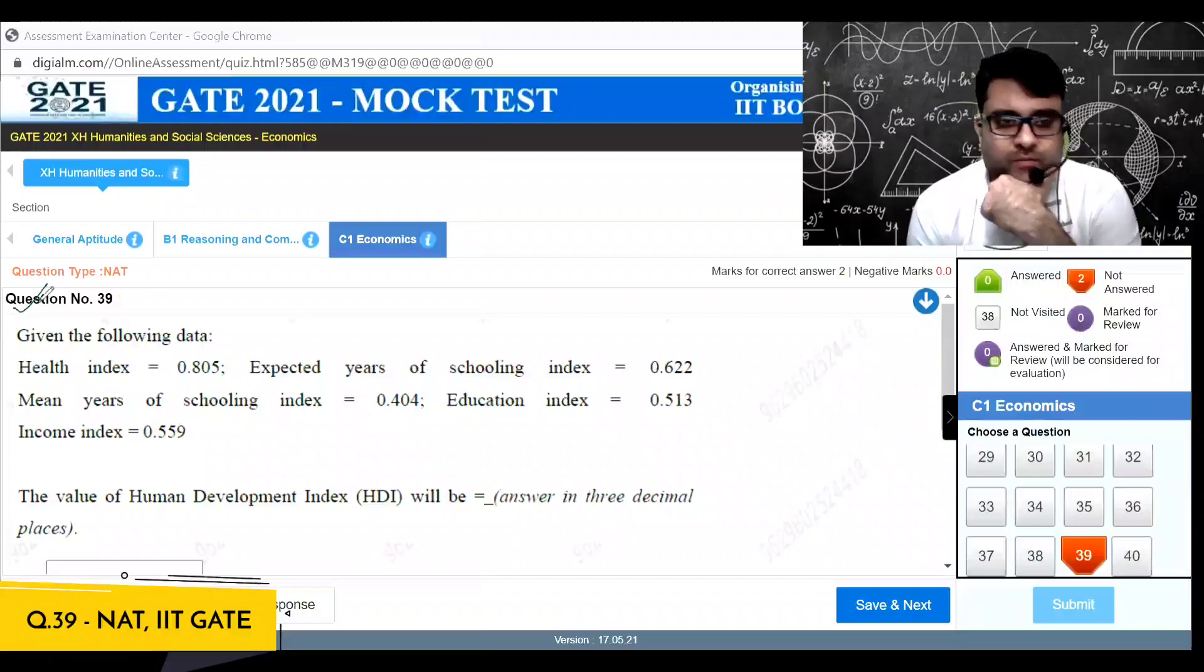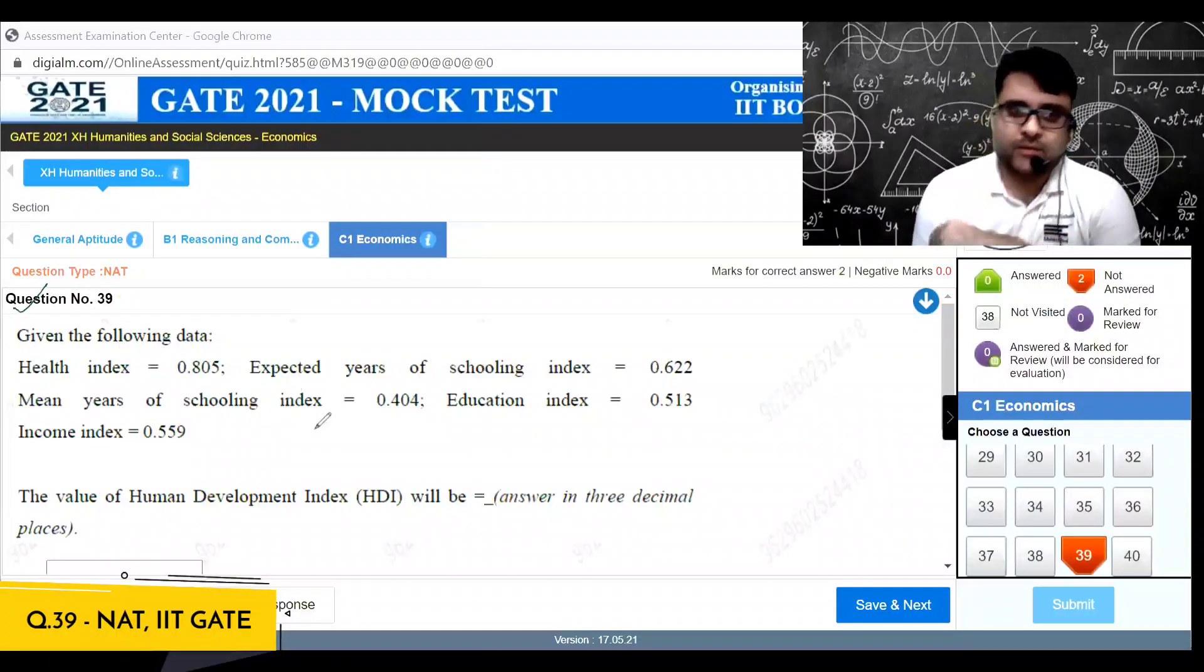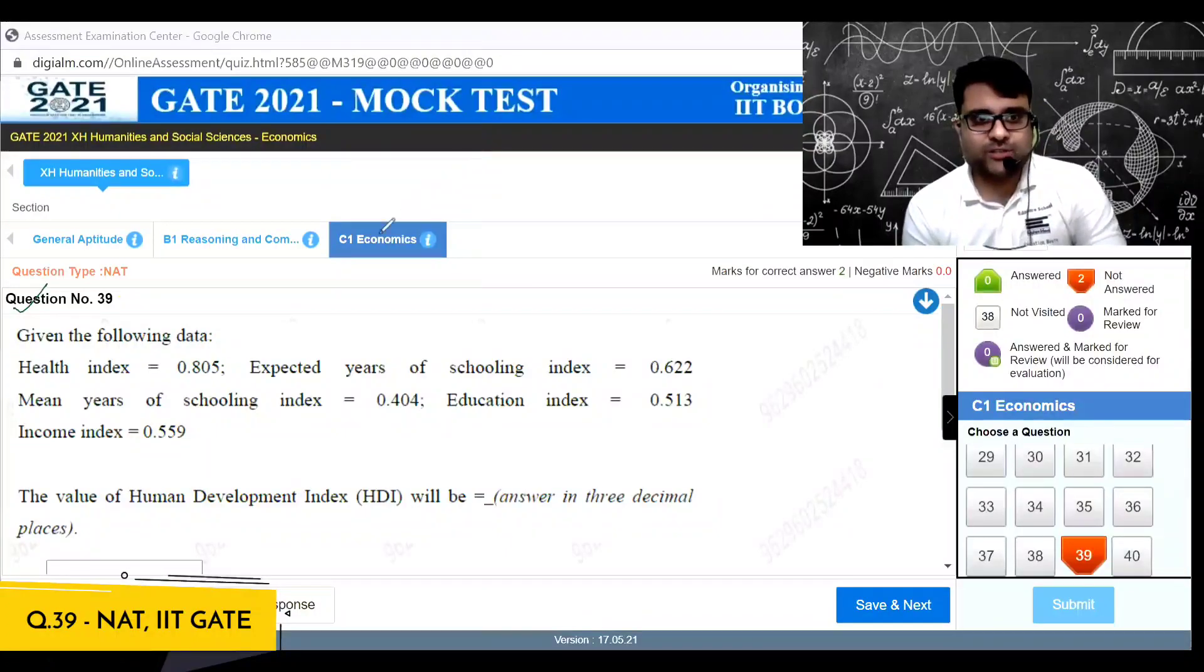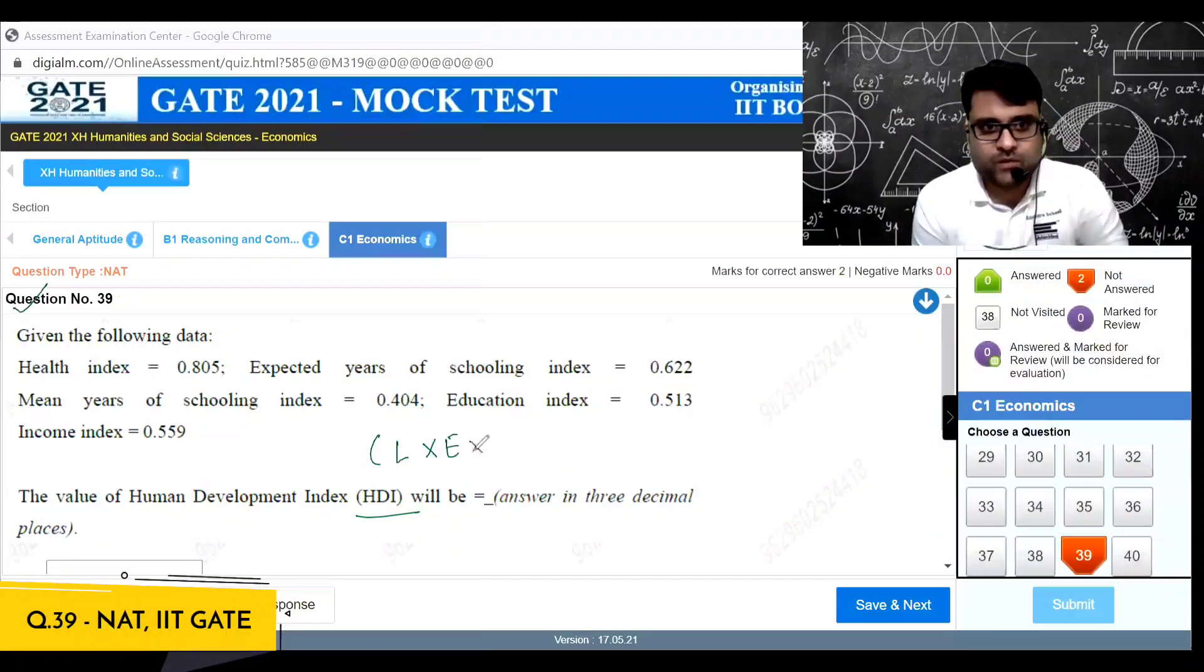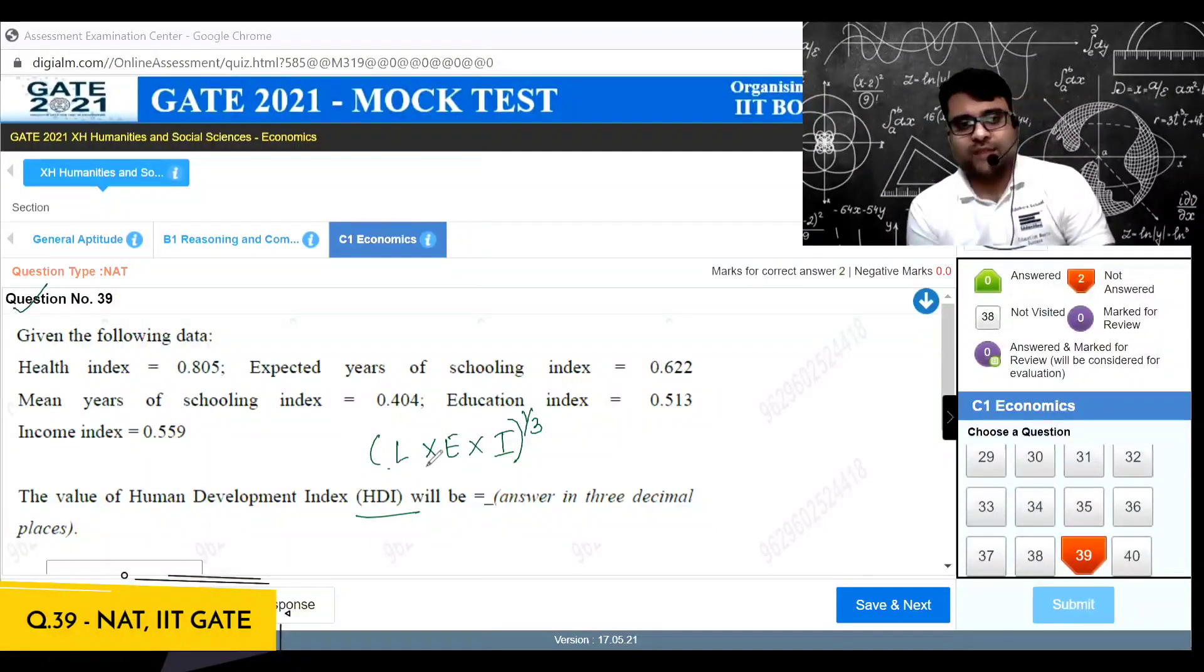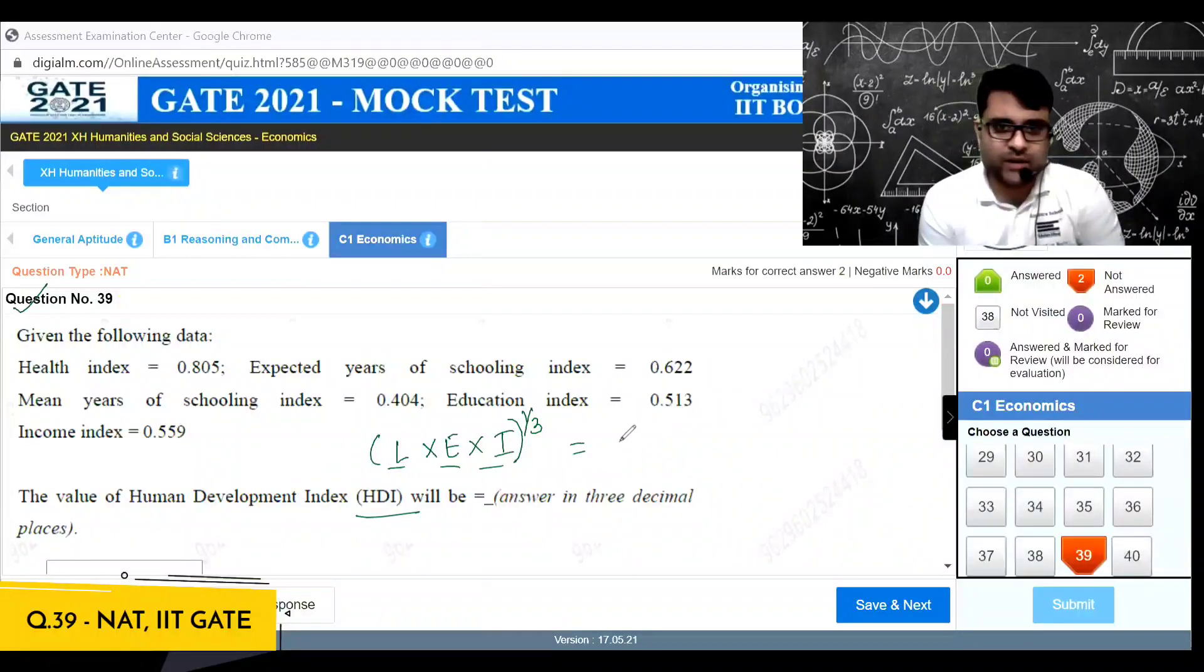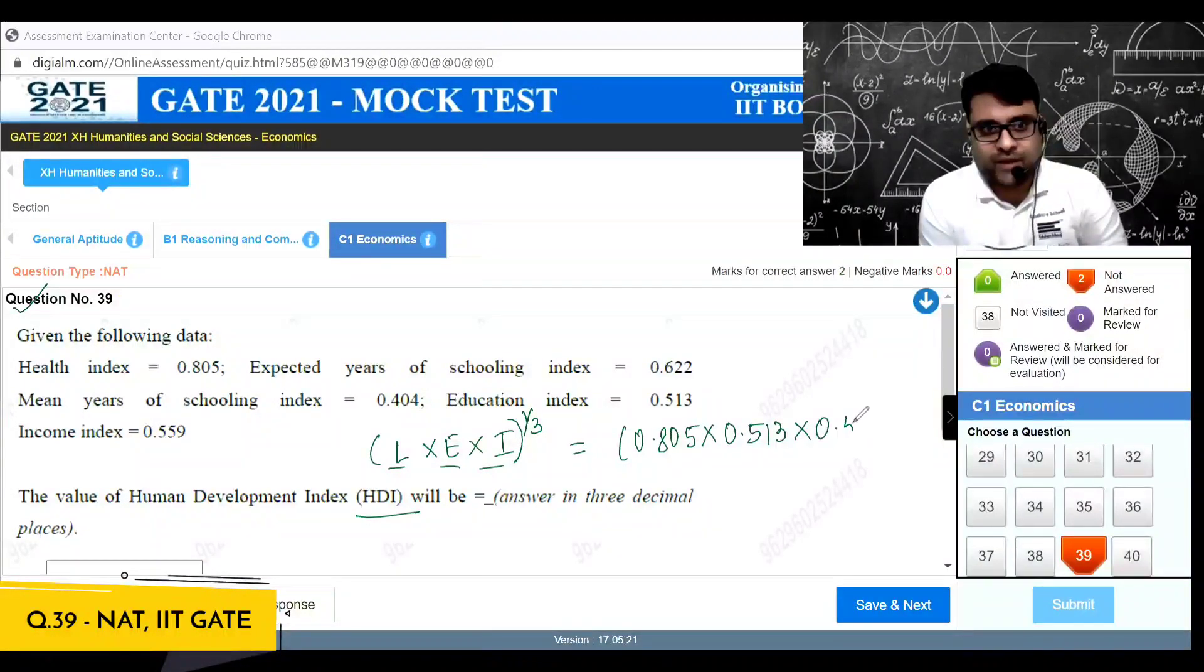Gate 2021 economic section question number 39. It's a direct question of finding out what will be the value of the Human Development Index. As I shared with you earlier, the Human Development Index is the geometric mean of health index or the life index, multiplied by the education index, multiplied by the income index. So a geometric mean of life index, education index, and income index.